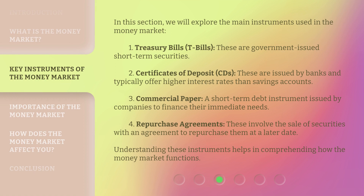In this section, we will explore the main instruments used in the money market. 1. Treasury Bills, or T-Bills — these are government-issued short-term securities. 2. Certificates of Deposit, or CDs — issued by banks and typically offering higher interest rates than savings accounts. 3. Commercial Paper — a short-term debt instrument issued by companies to finance their immediate needs. 4. Repurchase Agreements — these involve the sale of securities with an agreement to repurchase them at a later date. Understanding these instruments helps in comprehending how the money market functions.